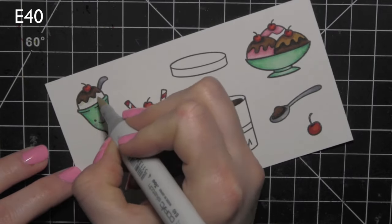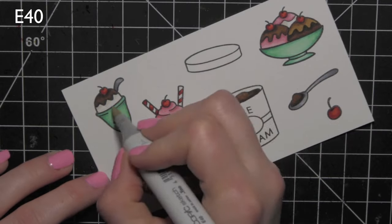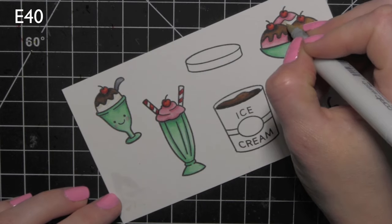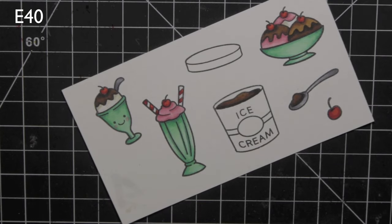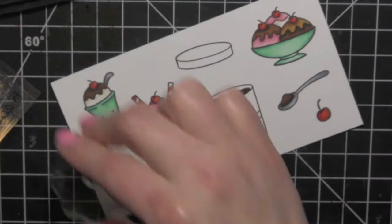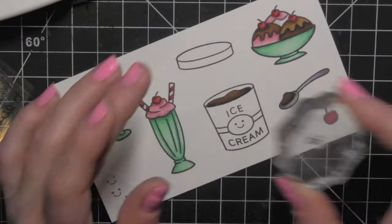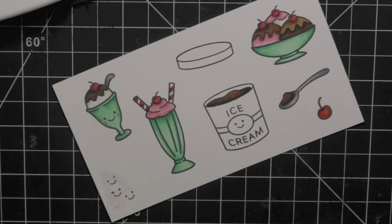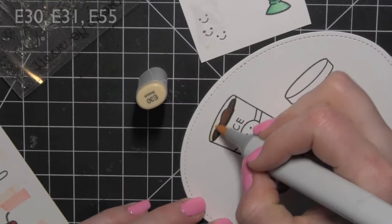For the white ice cream or the vanilla ice cream I'm using a little E40 very sparingly, just a touch to give it a tiny bit of color. And then there is a little face stamp in the Treat Yourself stamp set and I'm going to stamp that face on the ice cream bucket.